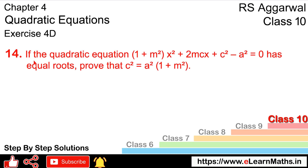Let's do question number 14 of Exercise 4d, that is quadratic equation. Question number 14 is: if the quadratic equation (1 + m²)x² + 2mcx + (c² - a²) = 0 has equal roots, then we have to prove that c² = a²(1 + m²).